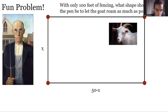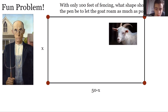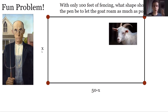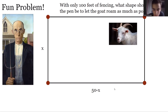Let's call the width of the rectangle x. x is a variable ranging from 0 to 50. The length is then 50 minus x, because 2 times x plus 2 times (50 minus x) equals 2x plus 100 minus 2x, which equals 100 — the perimeter. So the dimensions are x and (50 minus x), and we need to figure out which value of x yields the maximum area.